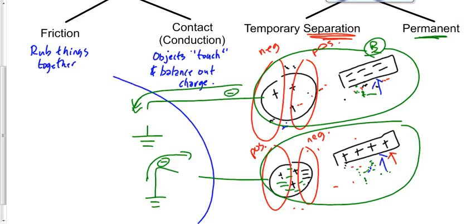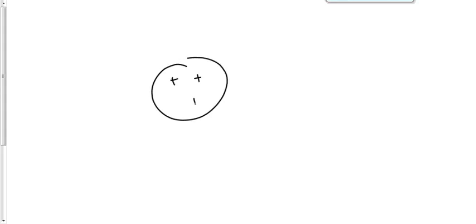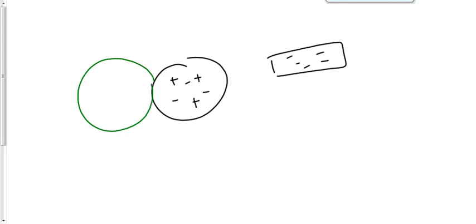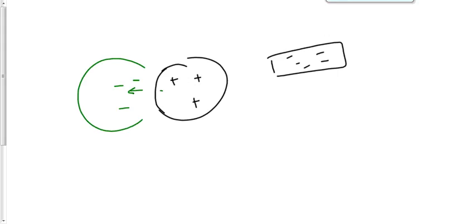Grounding doesn't have to mean literally attaching a wire to the Earth. You could bring another conductor — say a steel ball — touching the neutral object, and the electrons pushed over there go into that ball instead. We effectively grounded it without touching the actual ground. In many parts of the world they call it 'earthing' rather than 'grounding' — same thing. It doesn't literally have to touch the Earth, though usually it does.